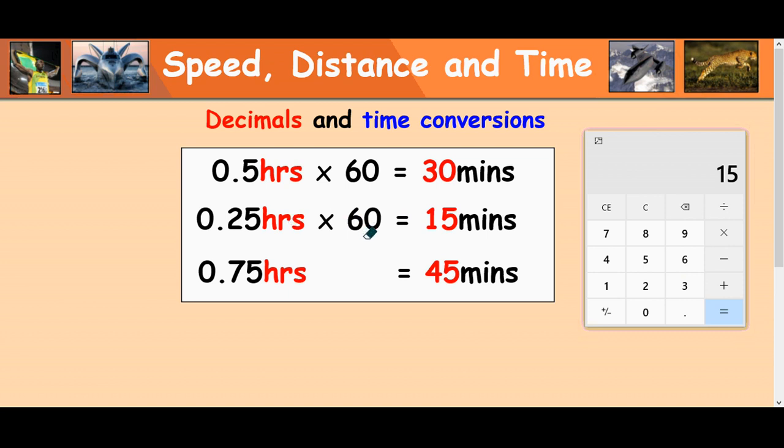So it's times by 60. It's the opposite this time. You're kind of going back to where you started. So we're doing opposite. Divide by 60, which is times by 60.